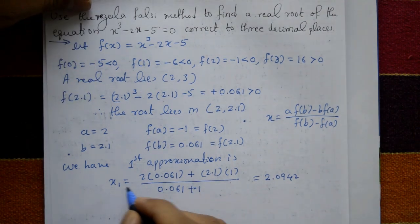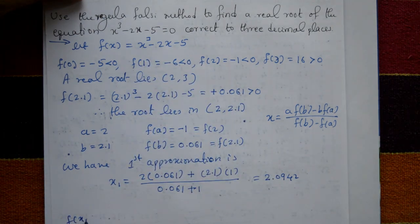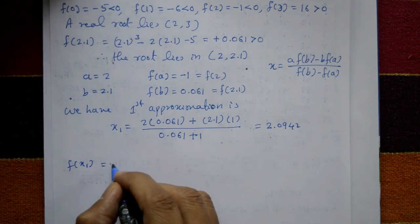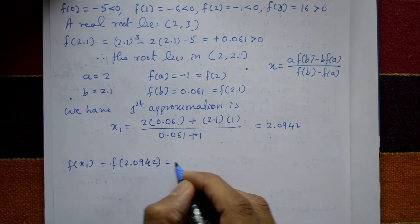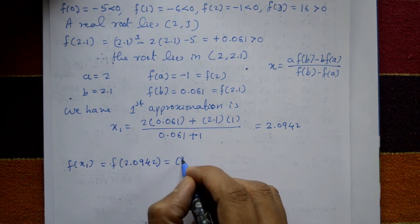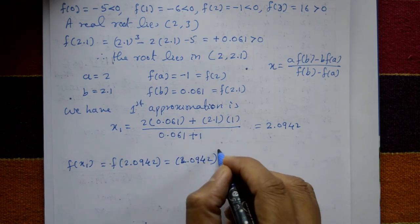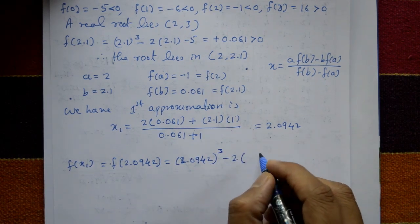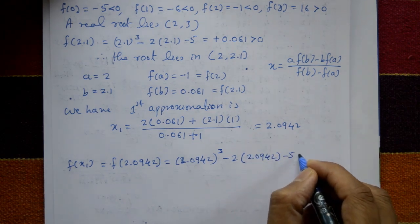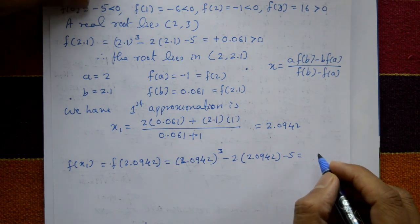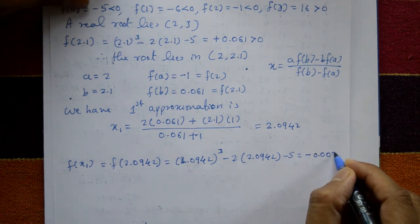Substitute x1 in f of x: f of 2.0942 equals 2.0942 cubed minus 2 into 2.0942 minus 5, which equals minus 0.00392.